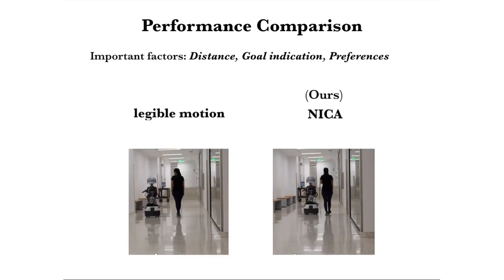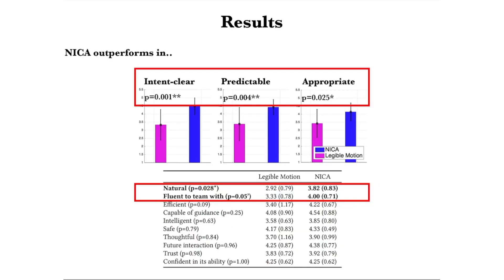As we discussed with some participants afterwards, we found that distance was often mentioned in descriptions regarding social appropriateness. Some prefer constant distance to the wall and refer to it as being natural, like working with a human. Some participants described goal indication as a bonus for fluent teaming and future interaction. We collected 18 survey questions. NICA performed better or equal to legible motion in all measures. Particularly with strong significance, NICA was perceived as being both more intent-clear and predictable. NICA is also perceived as being more socially appropriate and natural, with significance, and marginally significant as being more fluent to team with.